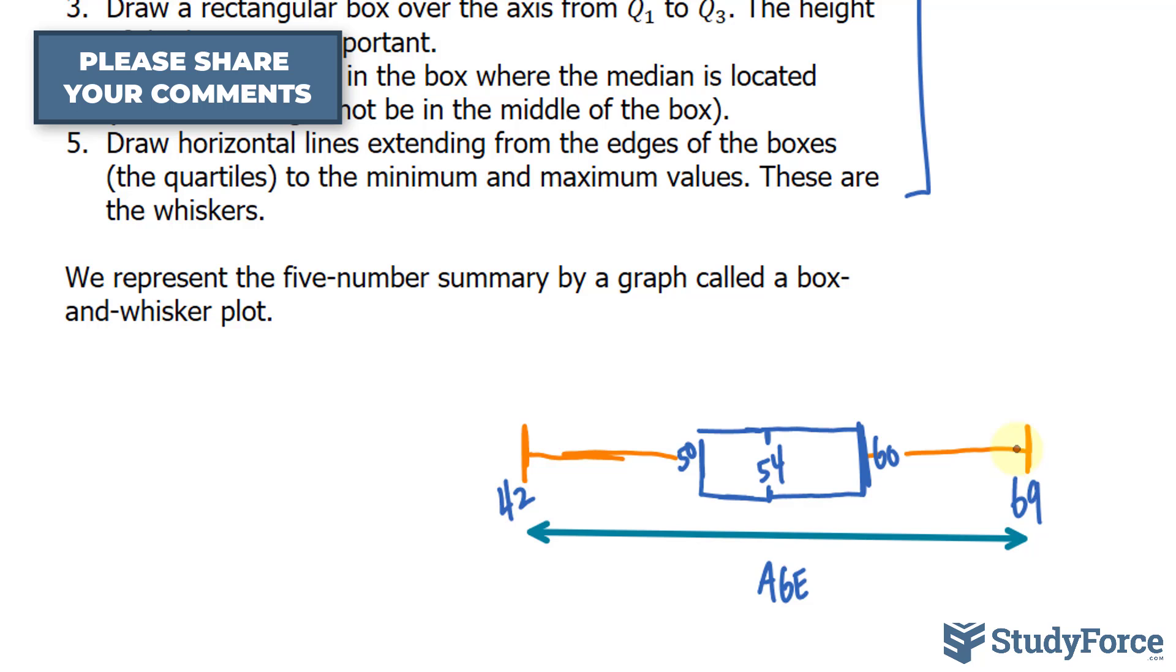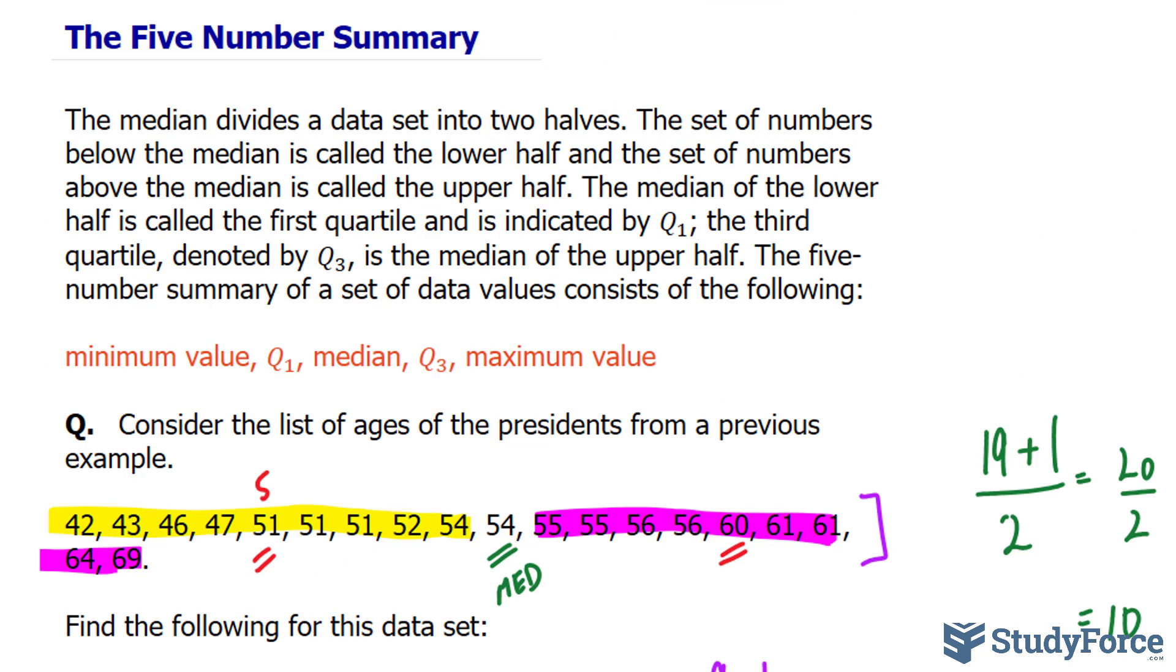This part is called the whisker. And of course, that's the box. And so there you have it. That is how to represent data using the five number summary and visually using the box and whisker diagram.